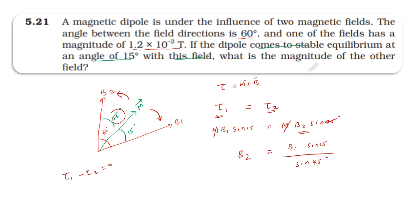B₁ is 1.2 × 10^-2 Tesla. Sin 15 degrees is approximately 0.2588, and sin 45 degrees is 1 over root 2.